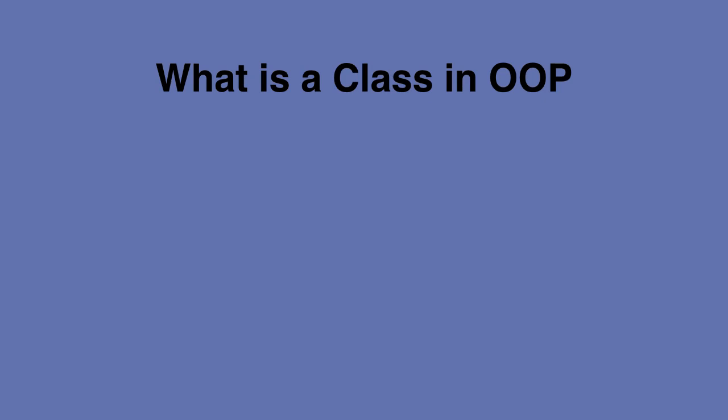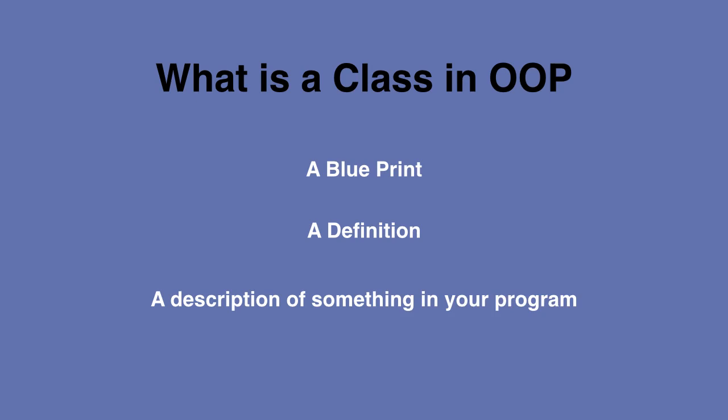First is, what is a class in OOP? And what is OOP? Well, OOP means object-oriented programming, and a class is just a blueprint, a definition, or a description of something inside your program.